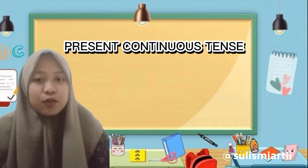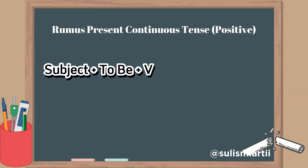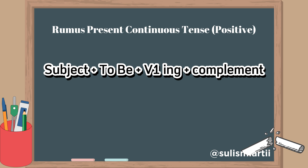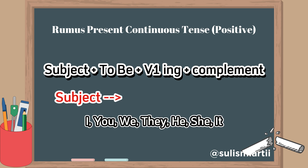In this video, we will discuss each form one by one. The first one is the present continuous tense in the positive form. There are: subject, to be, verb with -ing, and complement. The subject is someone who takes the action, like: I, you, we, they, he, she, it.